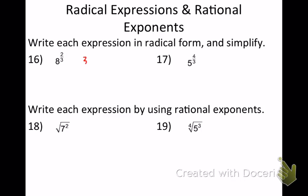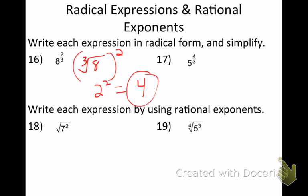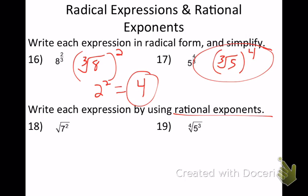Number 16: the cube root of 8 squared. What's the cube root of 8? 2. 2 squared is 4. Number 17: the cube root of 5 to the 4th power — that one does not simplify, you're good there. Number 18: write it as a rational exponent. What's the invisible root? If there's no root, it's 2. So write it as 7 to the 2 over 2. What's 2 divided by 2? 1. And 7 to the first power is 7.